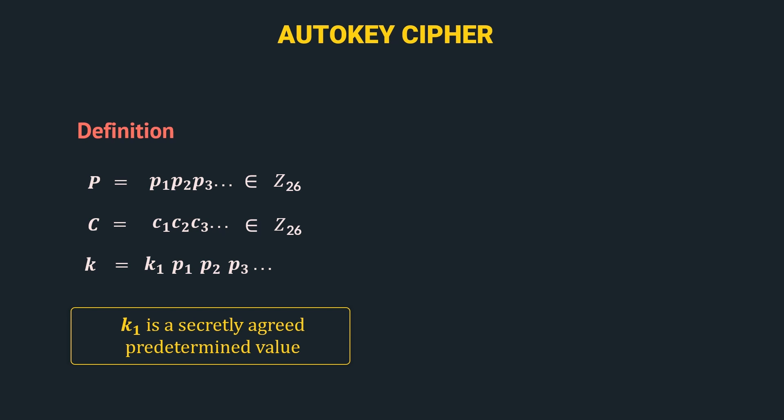The key stream is automatically generated once we know the value of k1 and the plain text, since it is a combination of k1 followed by the plain text characters. Thus, giving it its name auto-key cipher — the key is automatically generated once the value of k1 and the plain text is known. The domain of key k is also Z26.